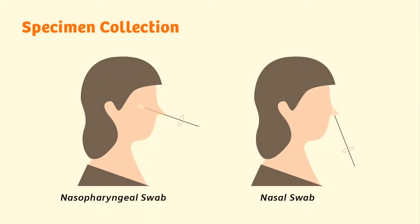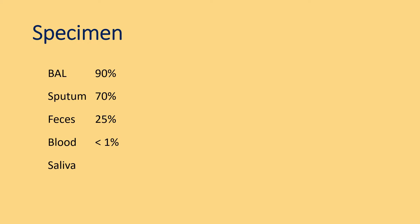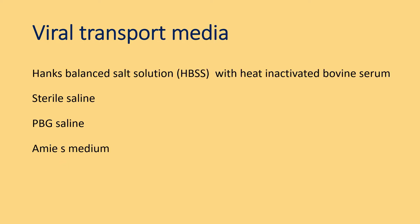This picture demonstrates the depth and angle of insertion for a nasopharyngeal swab. Other specimens that can be used include bronchoalveolar lavage and sputum. Isolation from feces, blood, and saliva is also feasible. Several viral transport media are used, the most common being Hank's balanced salt solution with heat-inactivated bovine serum.